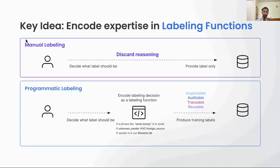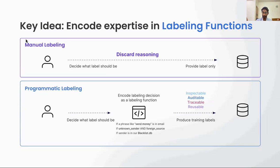Contrast manual labeling with programmatic labeling. Here, a subject matter expert provides heuristics or logic for how to label — these heuristics, which we call labeling functions, are used by the computer to then label millions of data points. The human does what humans do best: provide context and understanding in the form of heuristics. The computer does what it does really well: scale that using compute. And because that logic is captured, it's inspectable and auditable.